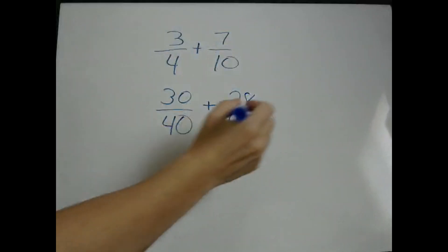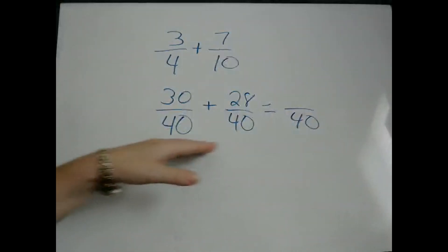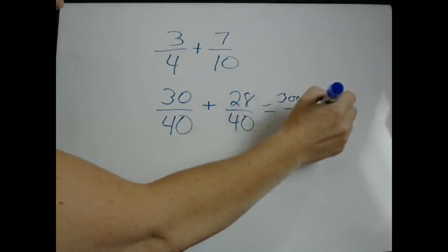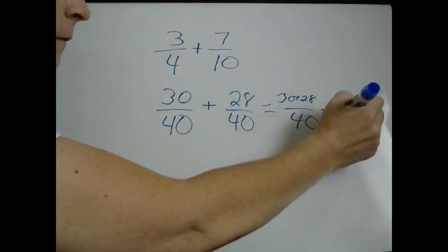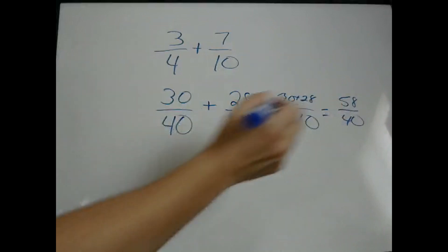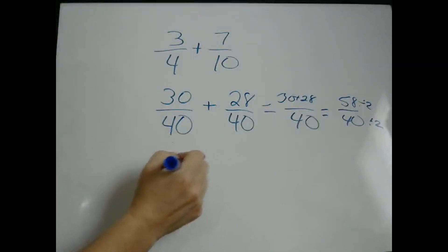Now that we have a common denominator, when you're adding fractions, you just leave the denominator the same. Then you just add: so it's 30 plus 28 over 40, which is 58 fortieths. This is not in lowest terms, and on the test they're probably going to want it in lowest terms. We can see that we can divide both 58 and 40 by 2, and we end up with 29 over 20.